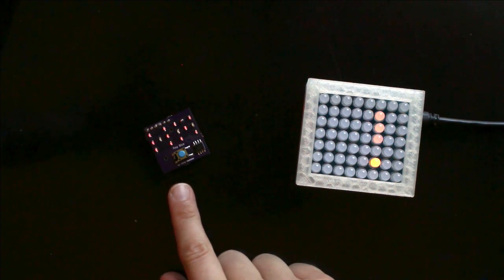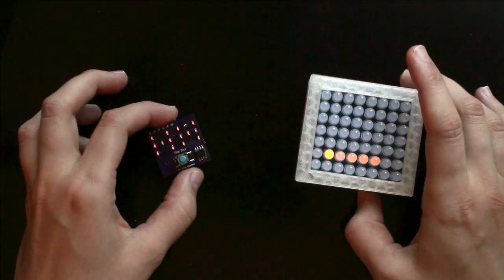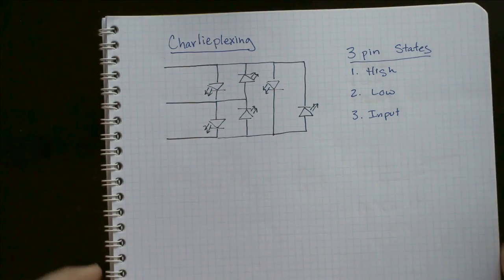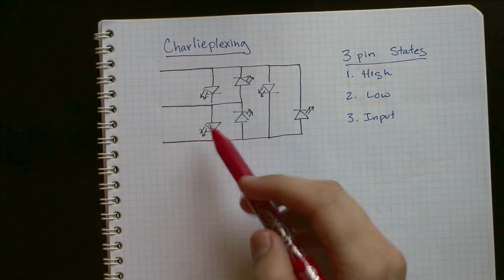And to explain this, I'm going to use the simplest circuit which uses Charlieplexing, and that is a 3-pin, 6-LED system.